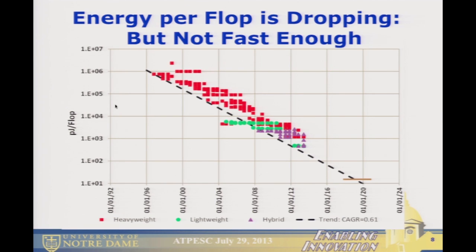Energy per flop is dropping. This plot shows energy per flop versus time, and if you're lucky, you'll get to the 20-picojoule goal by 2020. There are a lot of curves here that are about to hit some boundaries limiting this. The lightweight and hybrid GPU-like things have a shot at getting down there, but just barely.